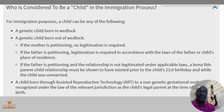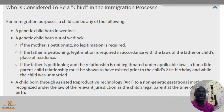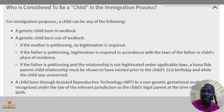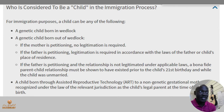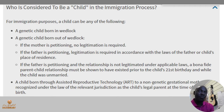Now if the father is petitioning and the relationship is not legitimate under applicable laws, a bona fide parent-child relationship must be shown to have existed prior to the child's 21st birthday and while the child was unmarried. You can't just take a child and say 'this is my child' — you must show that before the child was 21, there was some legitimate relationship.